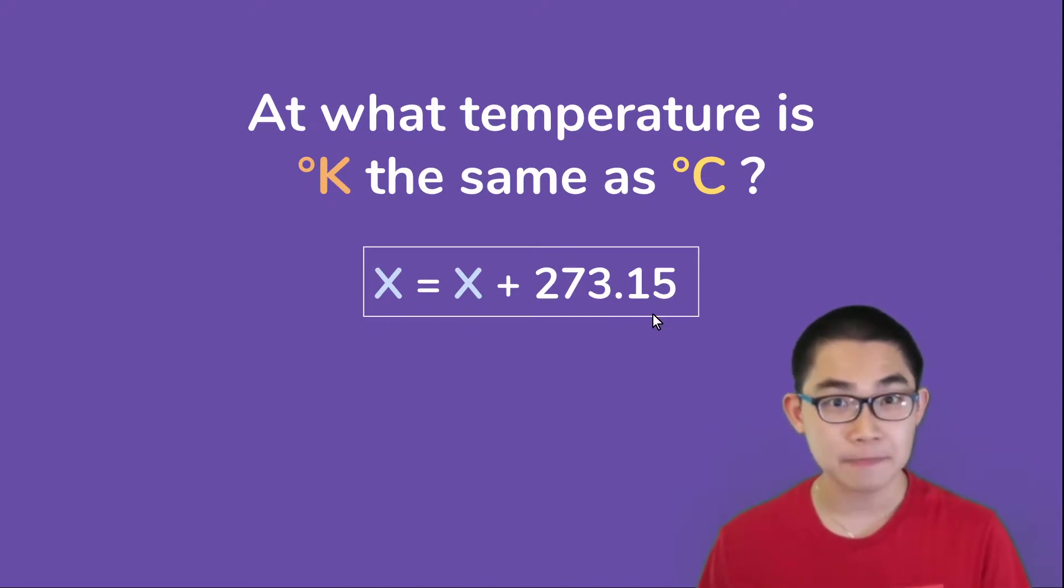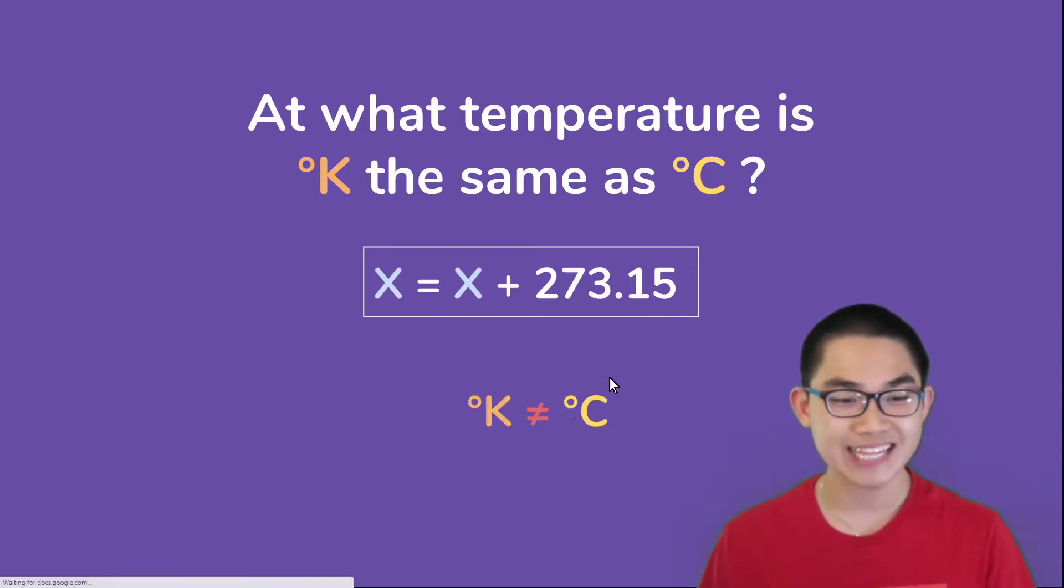But X equals X plus 273.15—that does not work as an equation. Because we cannot solve for X, we will say that we don't have a number where the Kelvin is the same as the Celsius. So there is no answer to this question.